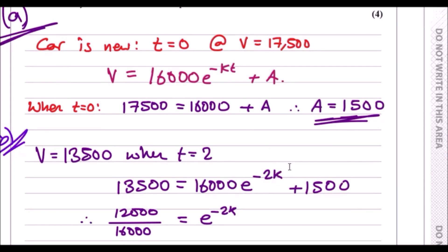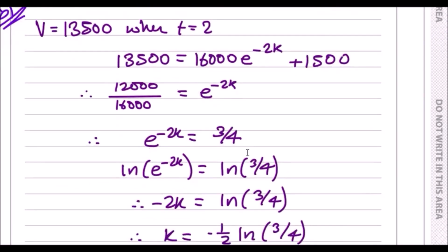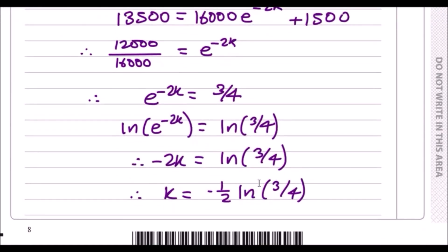Rearrange to make the e value the subject. I subtracted 1,500 from here to get 12,000, then divided by 16,000 and simplified to get 3 quarters. Now e to the negative 2k equals 3 quarters. To get rid of the e, use its opposite which is the natural log—ln. When you've got ln times e it cancels them out and you're left with minus 2k. Do ln both sides to get ln 3 quarters, and divide by minus 2 across.